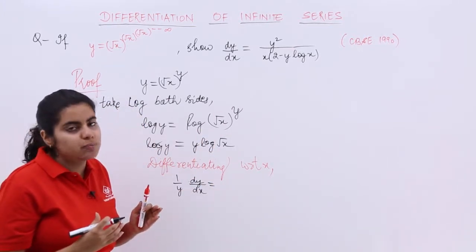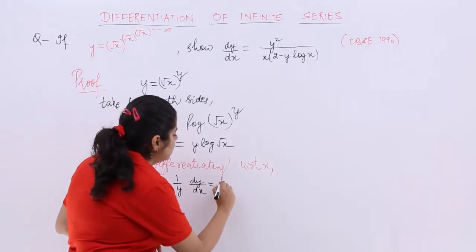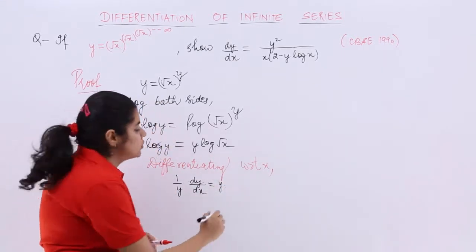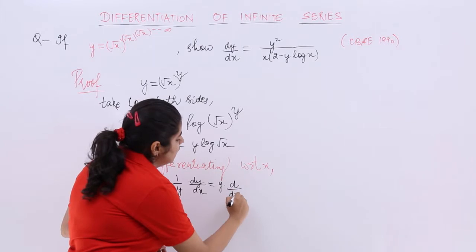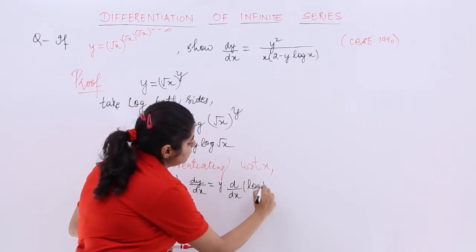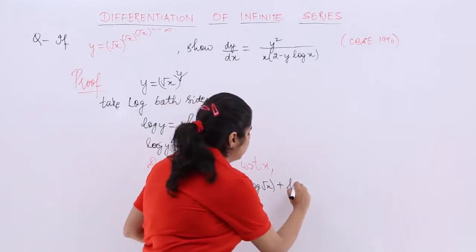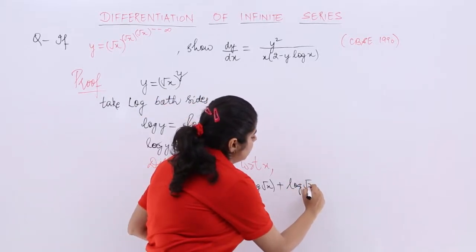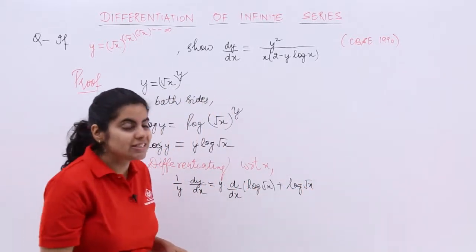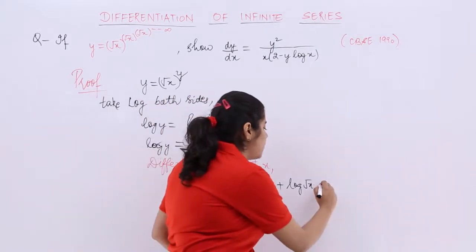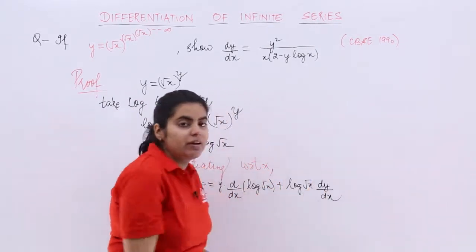Multiplication of two things, product rule. Means you have to leave the first, differentiate the second. Differentiation of the second, let me write it like this first. Plus you have to leave the second, differentiation of the first. Differentiation of y is dy by dx.